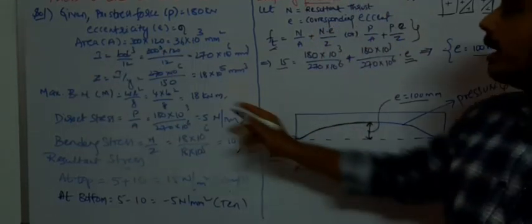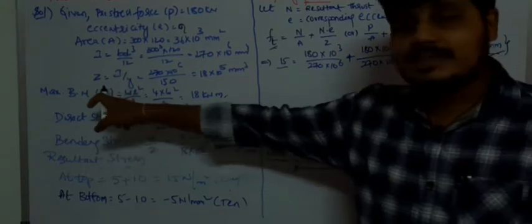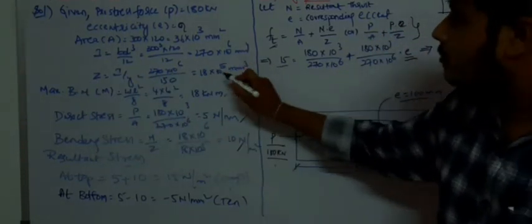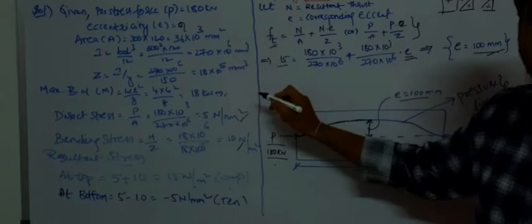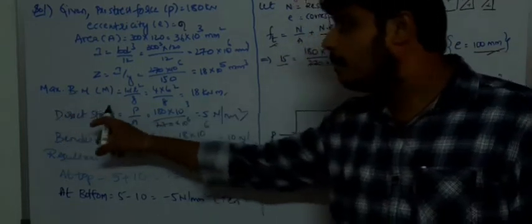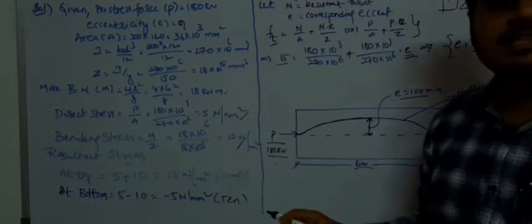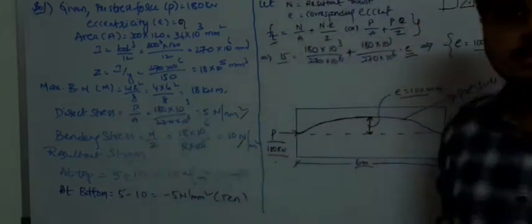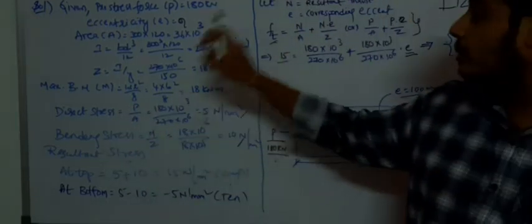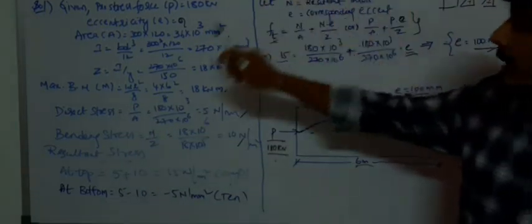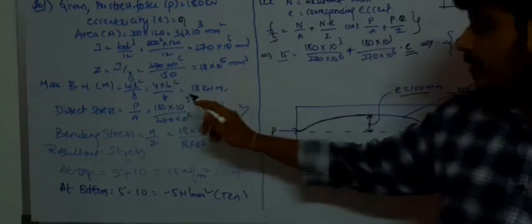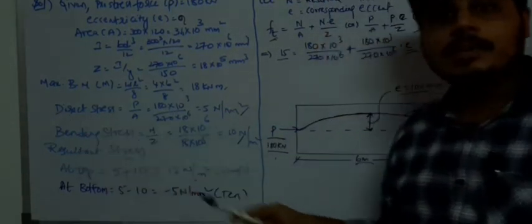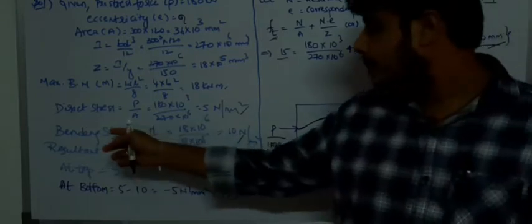Section modulus Z equals I divided by Y, where I equals B·D³/12. Substituting values: the maximum bending moment M equals WL²/8, where W equals 4 kN/m and L equals 6 meters, giving M equals 18 kN·m. The direct stress equals P divided by A.